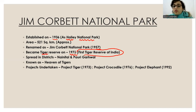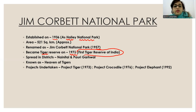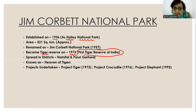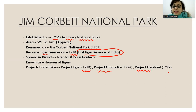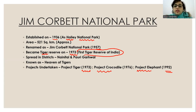Which projects have been undertaken in Jim Corbett National Park? Project Tiger in 1973, the year when it was declared the first tiger reserve of India. Project Crocodile in 1976, for the conservation of crocodiles. Project Elephant in 1992. So these are the important dates — remember which year each project was launched.